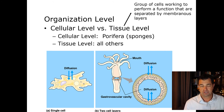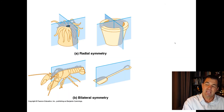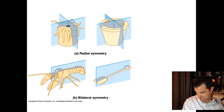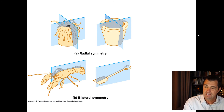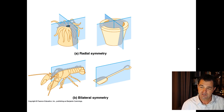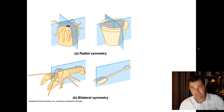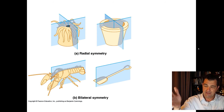A tissue on an organism or animal is a group of cells that work together to perform some kind of function. The other important concept here is symmetry — we'll see two kinds of symmetry in most of our animals, and we'll use these to distinguish what group they fit into.